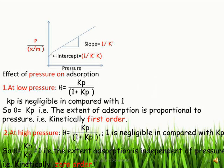At low pressure, θ ≈ KP, meaning the extent of adsorption is proportional to pressure — kinetically this is first order. So at low pressure, the order of adsorption is 1. At high pressure, θ = KP/(1 + KP), and now 1 is negligible compared to KP in the denominator, so θ ≈ KP/KP = 1. The extent of adsorption is independent of pressure — kinetically this is zero order. So at high pressure, the order of adsorption is 0.